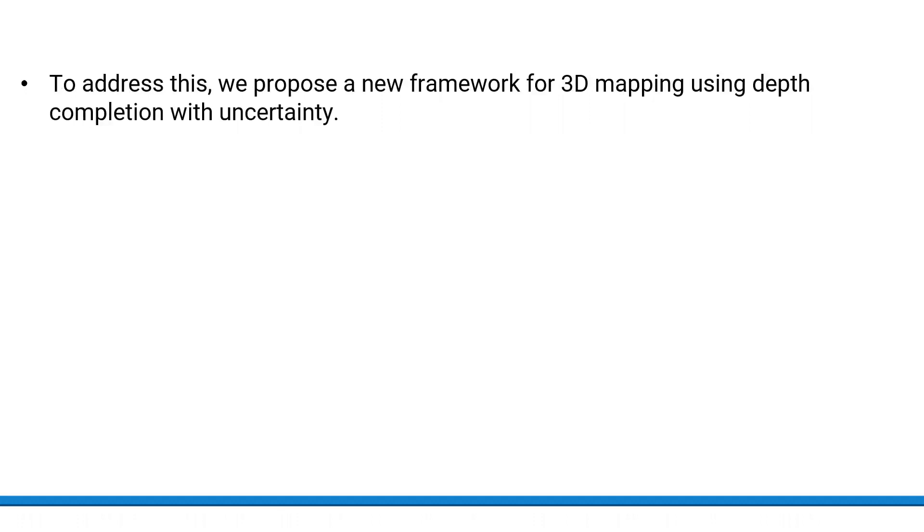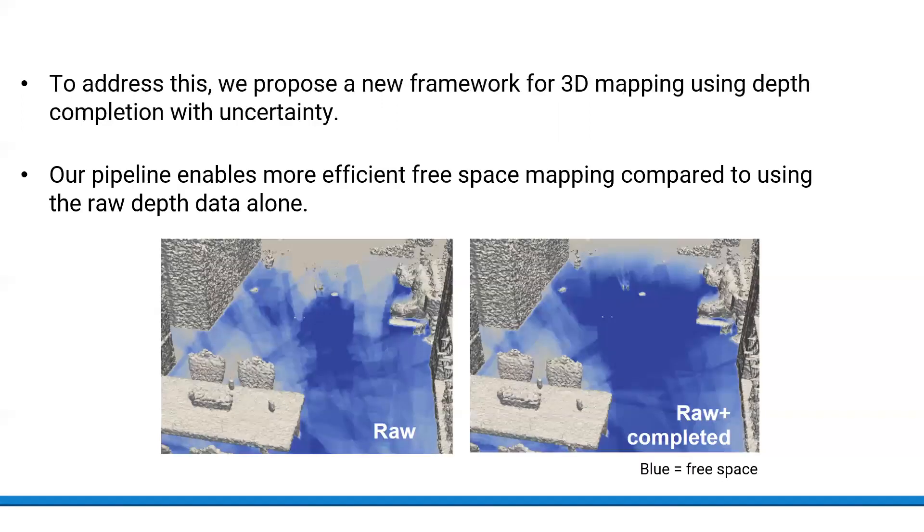To address this, we propose a framework leveraging probabilistic depth completion as an additional input for spatial 3D mapping. Our pipeline enables us to produce maps with more discovered obstacle-free space compared to using the raw depth images alone.